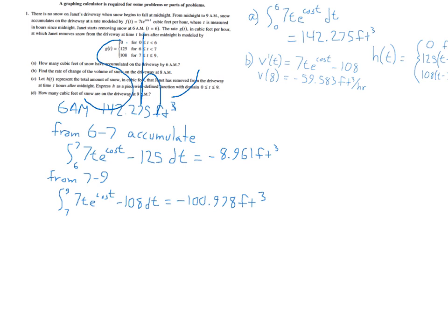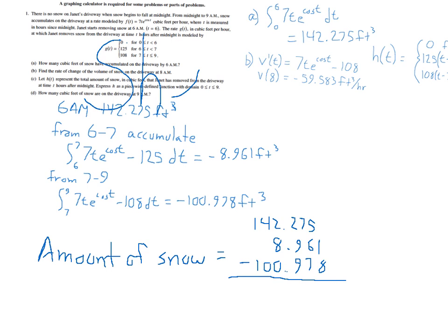So the total amount of snow equals 142.275 minus 8.961 and minus 100.978 for a grand total of 26.335 cubic feet. And we're done. That is 2010 AP Calculus AB Free Response Question Number 1.